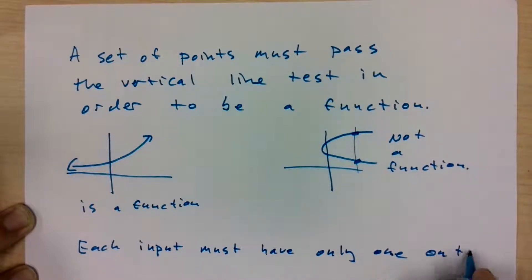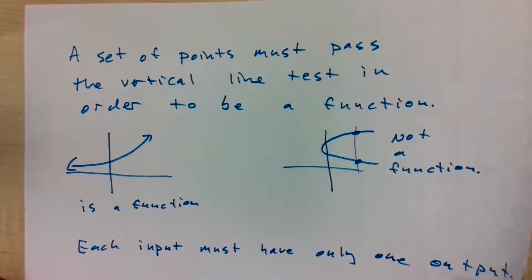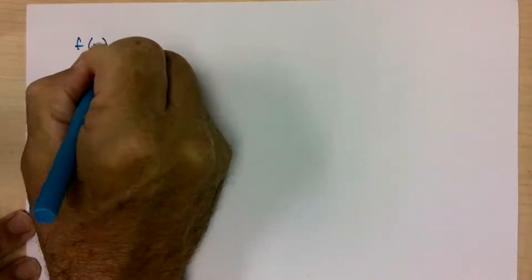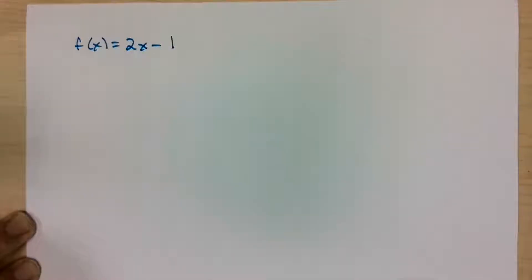We're going to look at outputs for various functions in this lesson. Let's take a look at a relatively straightforward one: f of x equals 2x minus 1. We're going to plug in various values for x.